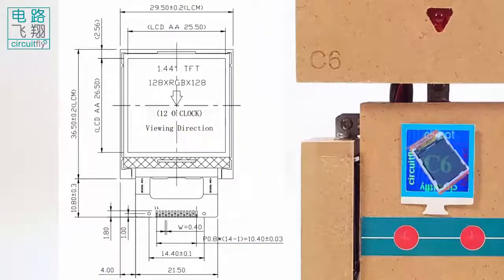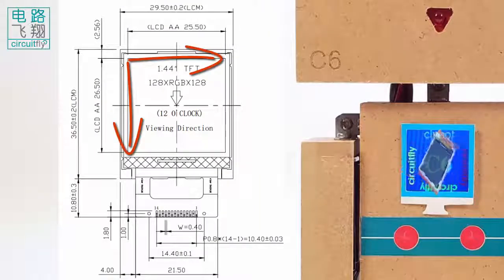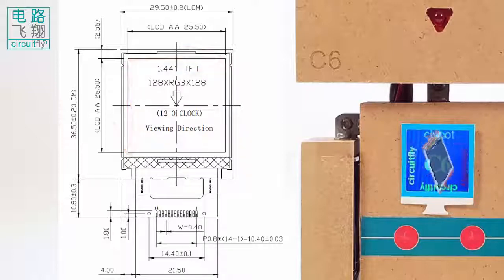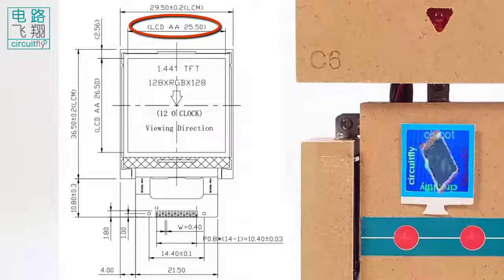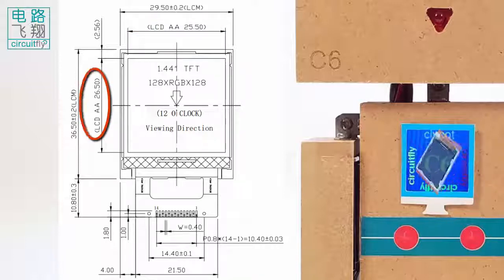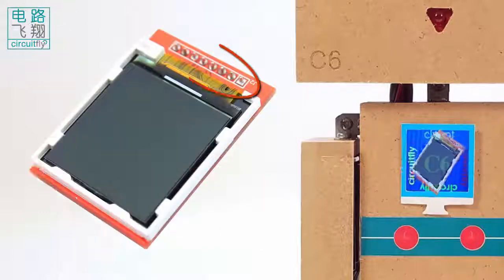The color TFT LCD is a 128x128 dots matrix module. The pixel size is 0.2x0.2mm, with the viewing area of 25.5mm wide and 26.5mm height. There are 8 pins on the module.